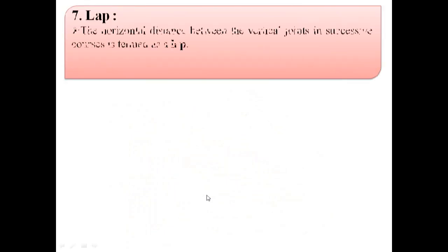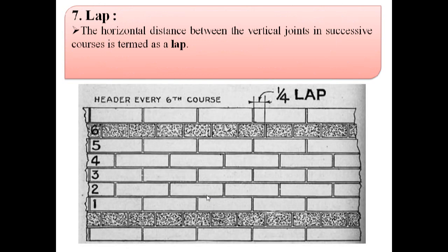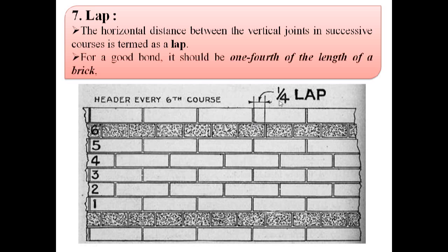The seventh term is lap. The horizontal distance between the vertical joints in successive courses is termed as a lap. As shown in this image, these are two successive courses and the horizontal distance between the vertical joints in those successive courses is known as lap. For a good bond, lap should be one fourth of the length of a brick.